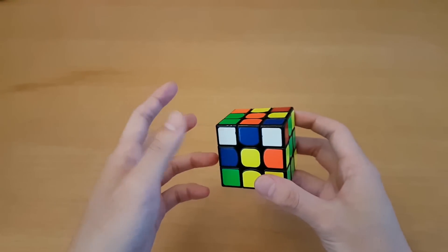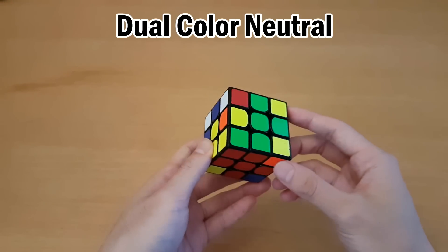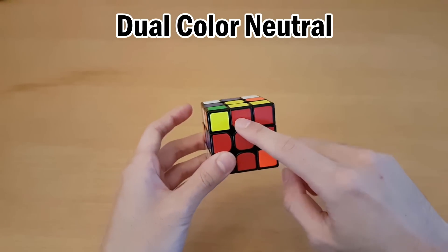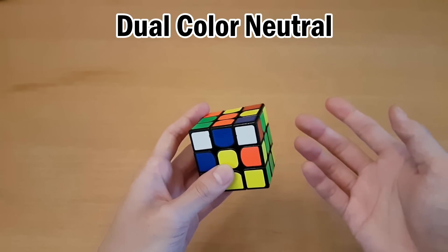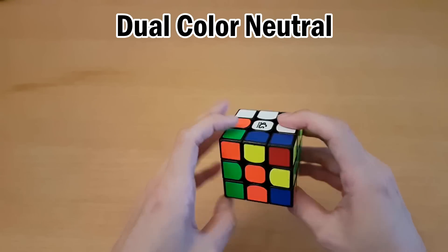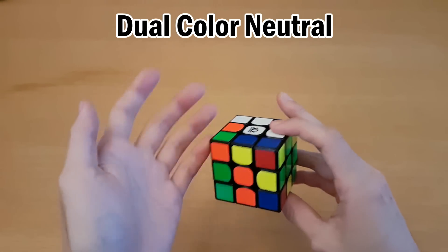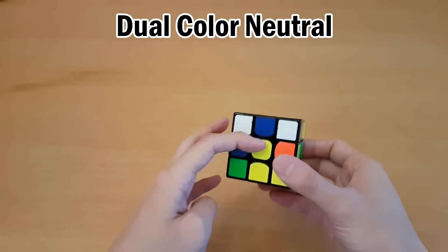So before I talk about how to become color neutral if you're not, I'm going to talk about dual color neutrality, which means you can solve one cross color or the opposite cross color because they will have similar color patterns. So often what people will learn is white cross and then if they get a bad cross on white, then they'll pick yellow instead.